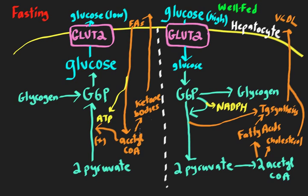Another thing that happens when you oxidize fatty acids is that acetyl-CoA, if you have a lot of it, can be shunted into ketone bodies — for example, beta-hydroxybutyrate or acetoacetate. These can be thought of as acetyl-CoA carriers that go into the plasma. They are acidic, so the downside is they lower the pH. Other tissues can use ketones as a secondary fuel source to generate acetyl-CoA and ultimately make ATP.